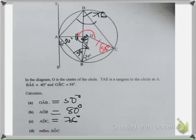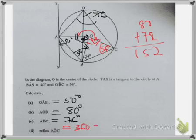54 plus 54 is 108, then this is 72. Therefore, we have 80 and 72. 80 plus 72 is 152. From 360, therefore the answer is 360 minus 152, which is 208 degrees.